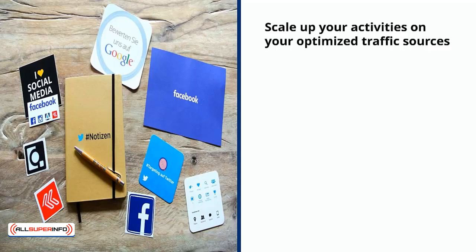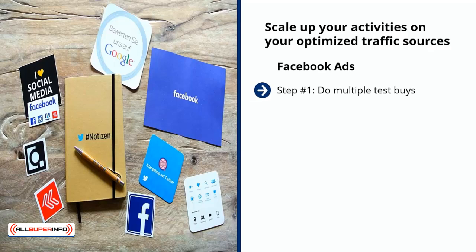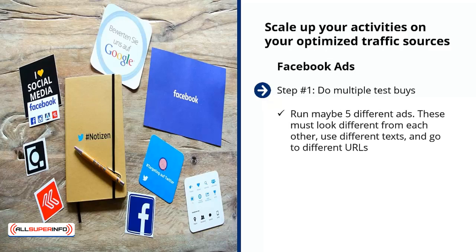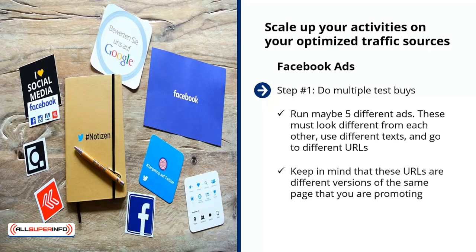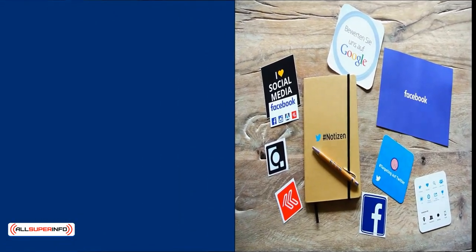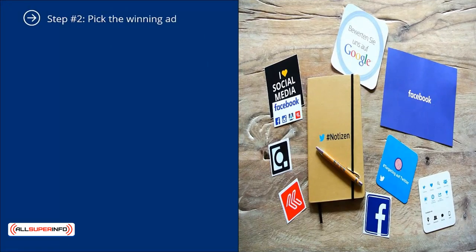Facebook Ads optimization strategies: step number one — do multiple test buys. Run maybe five different ads; these must look different from each other, use different texts, and go to different URLs. Keep in mind that these URLs are different versions of the same page you are promoting — they are different because they are tracking URLs. Spend very little money at this stage; a one-dollar daily ad buy per ad is a good idea if you're testing five or more ads. Step number two: pick the winning ad — the best traffic producer. Deactivate everything else and stick with the winning ad.